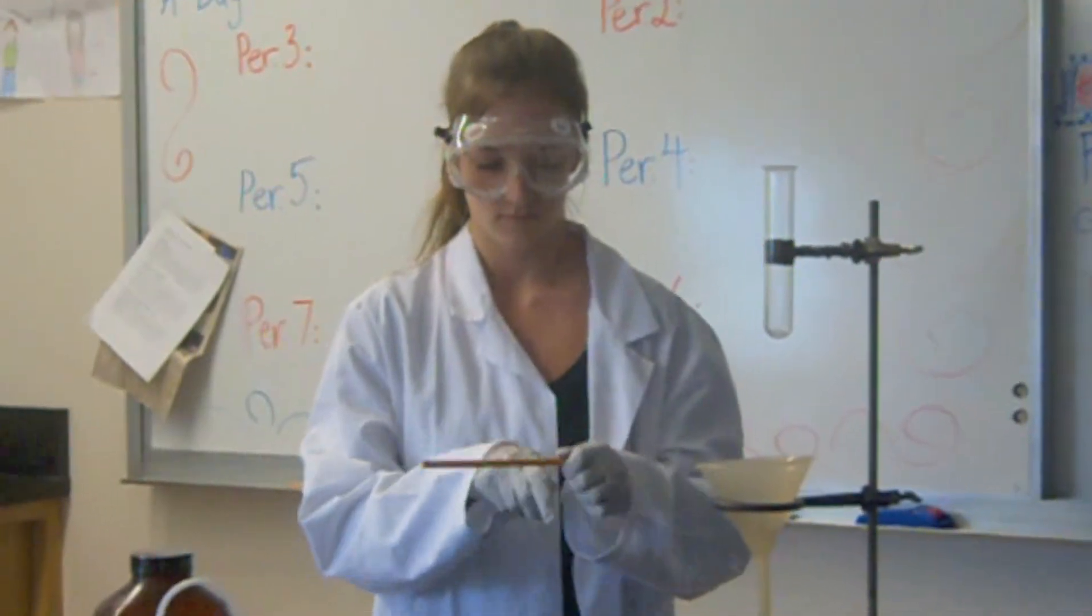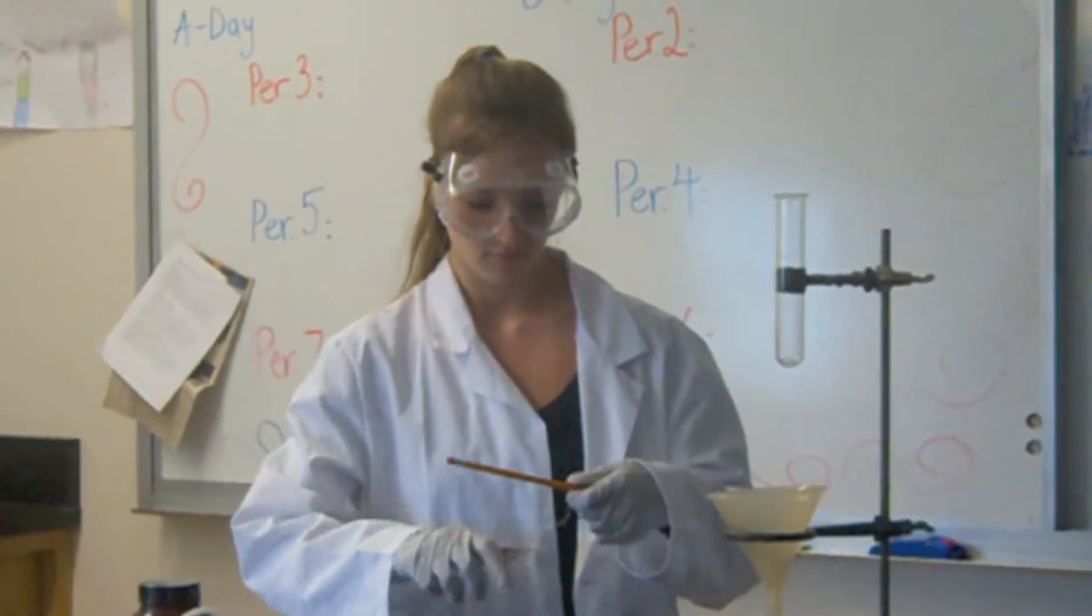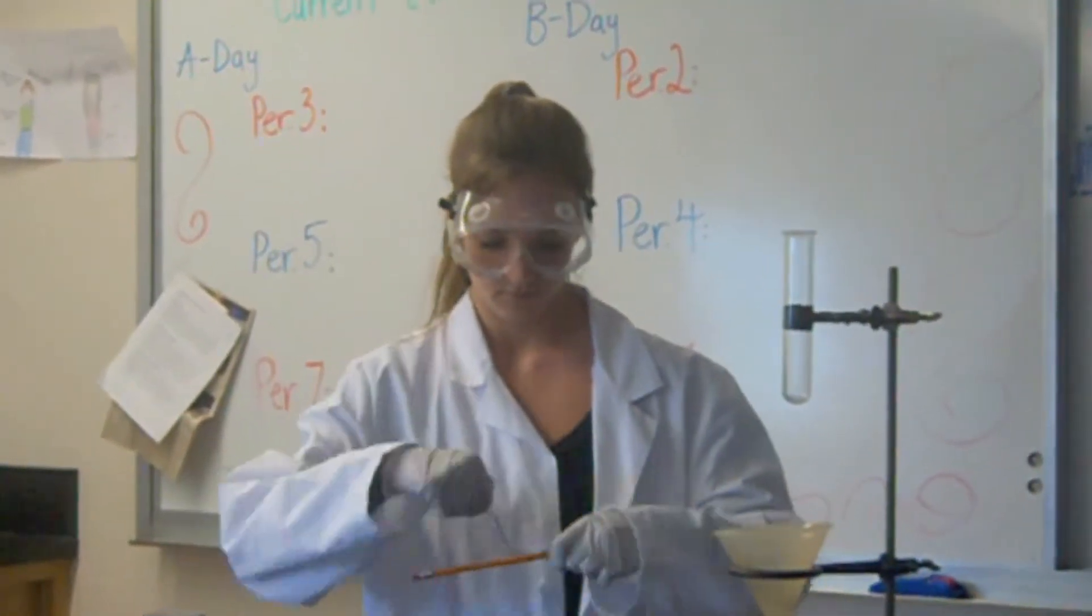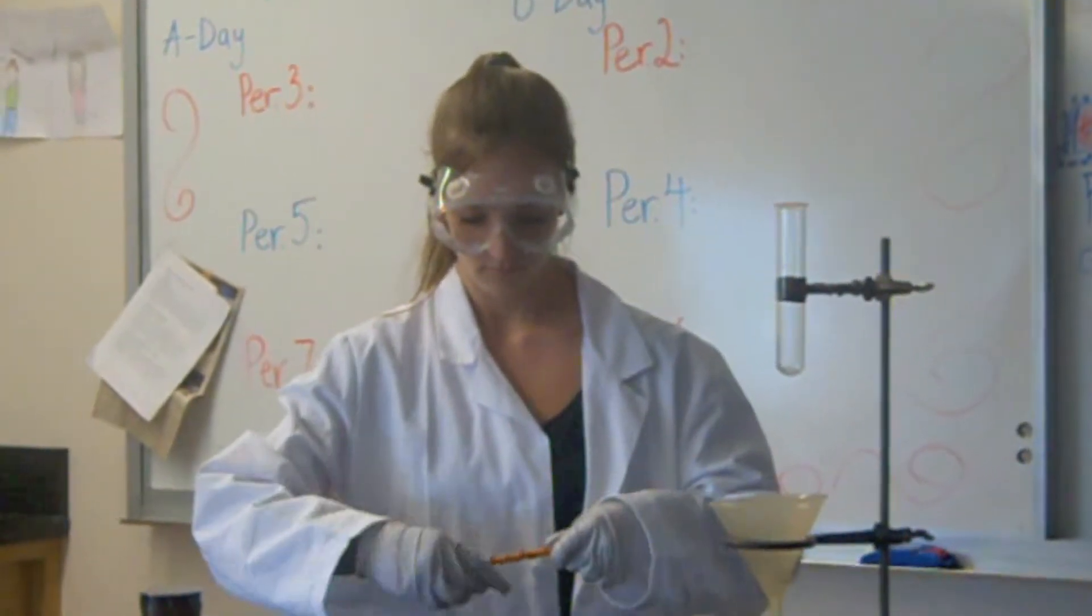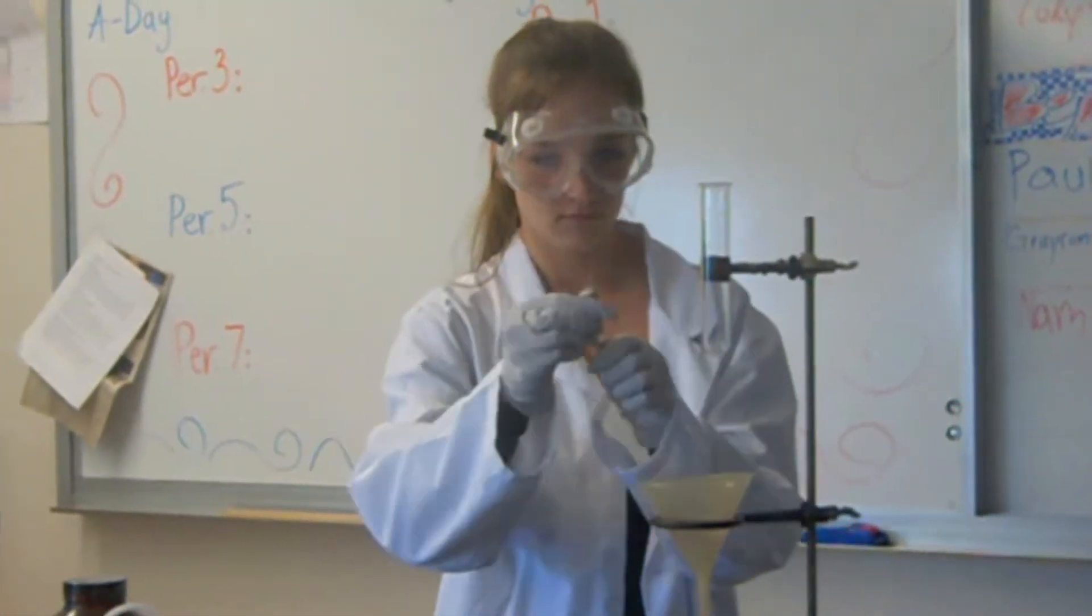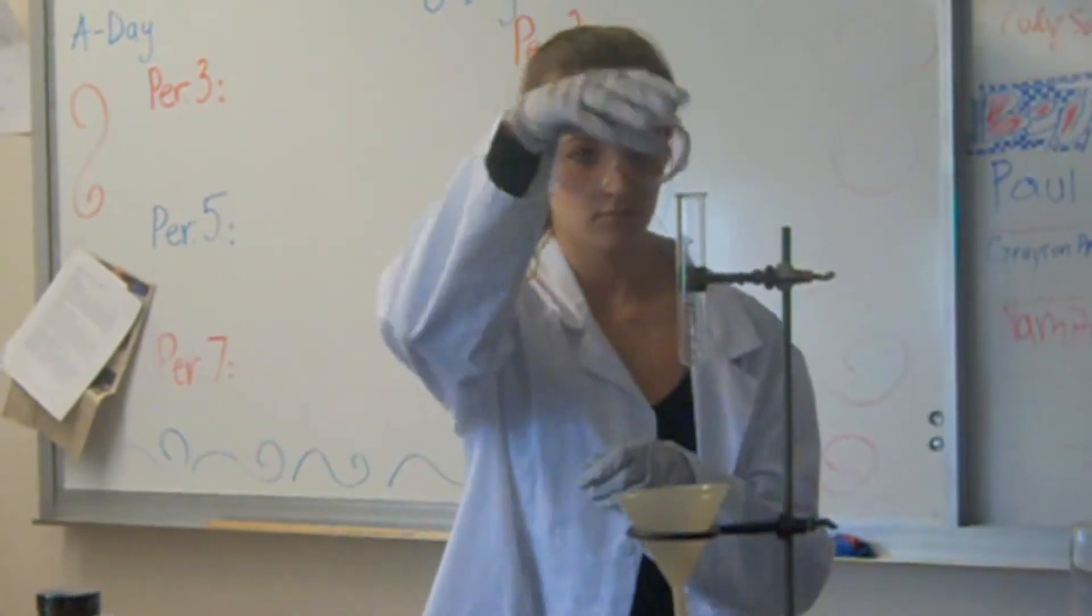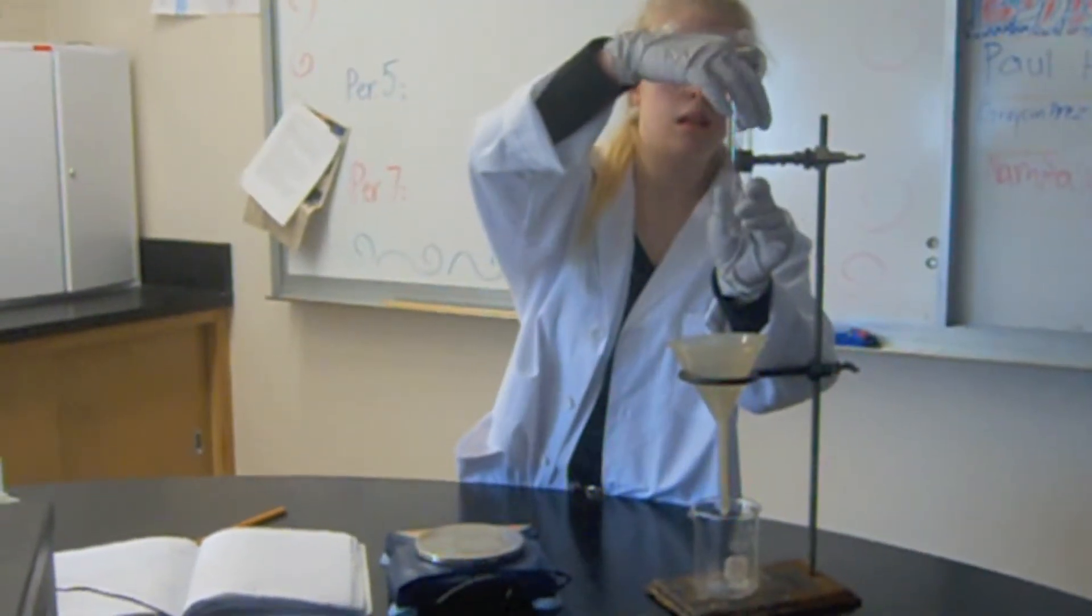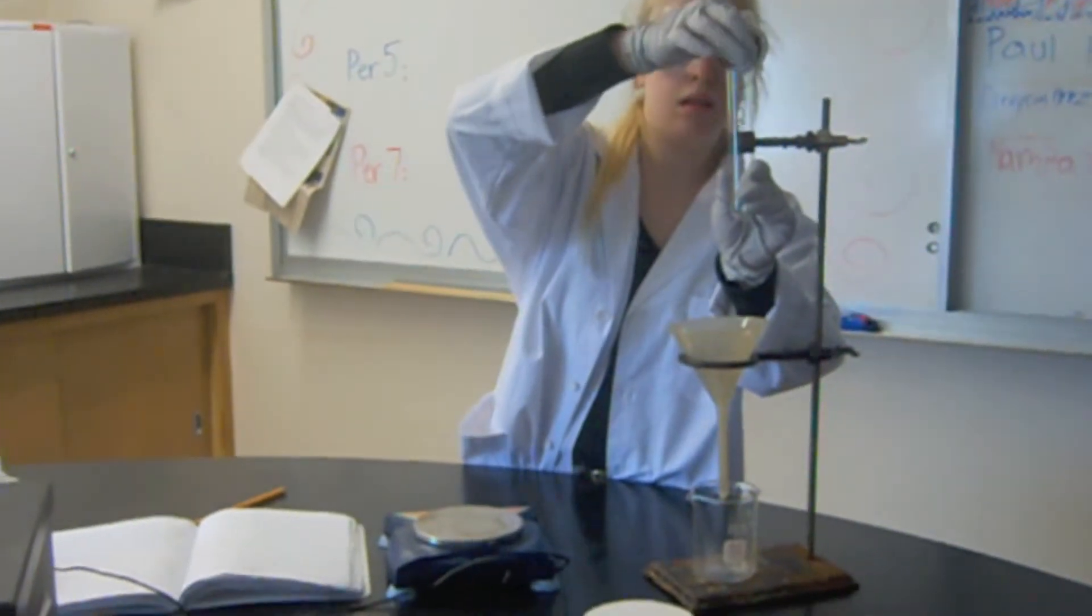This is the Silver Nitrate Lab. Obtain a 30 cm length of bare copper wire and coil it around a pencil, creating a loose coil or spring on one end. Stretch the coil to reach the bottom of the tube, with the other end reaching the top of the test tube. Weigh the coil and place the copper in the test tube.